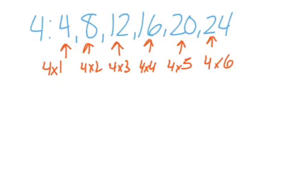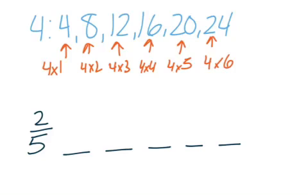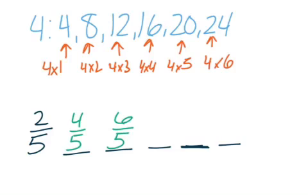Let's take a look at what it means when we're finding our multiples of fractions. Let's start with 2 fifths, and we want to find the next 5 multiples of 2 fifths. We're going to skip count, and the only thing that's going to change is our numerator. So 2 fifths changes to 4 fifths, then 6 fifths — skip counting by 2 — 8 fifths, 10 fifths, and 12 fifths.